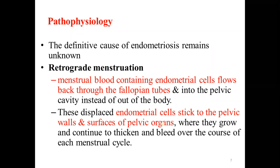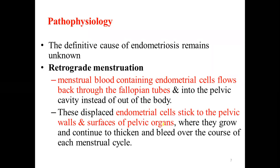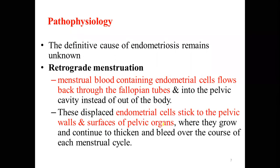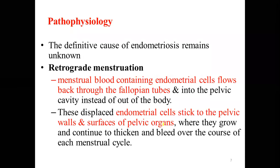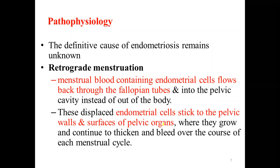One theory is retrograde menstruation. Normally during the menstrual cycle, blood flows from the uterus down to the vaginal areas. However, sometimes menstrual fluid can get back into the fallopian tube, carrying some endometrial cells. Those cells can stick to the pelvic wall and pelvic organs and continue to grow. Retrograde menstruation can happen even in a normal menstrual cycle, predisposing endometrial cells to stick to the pelvic wall and proliferate in organs outside the uterus.